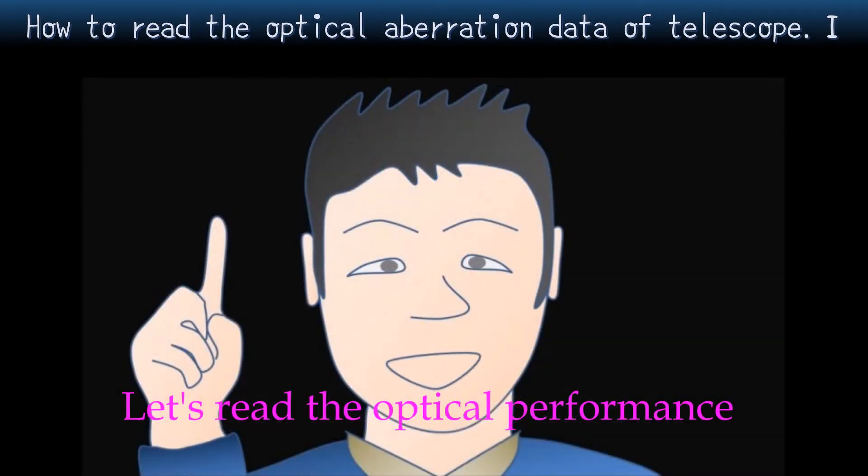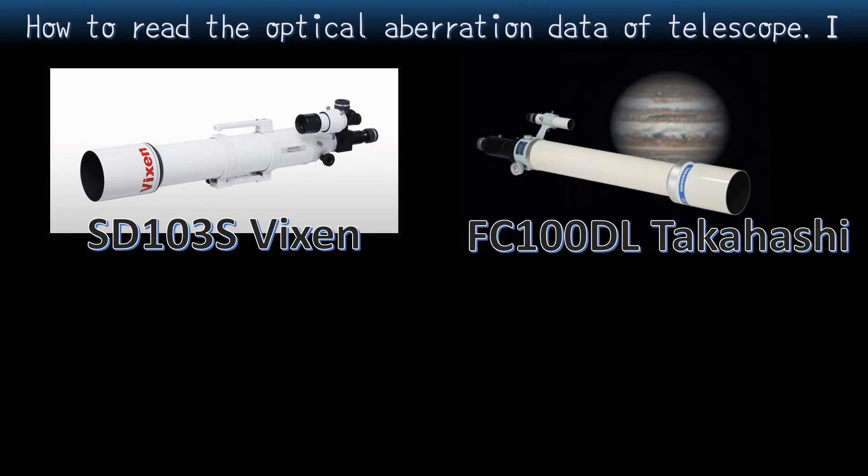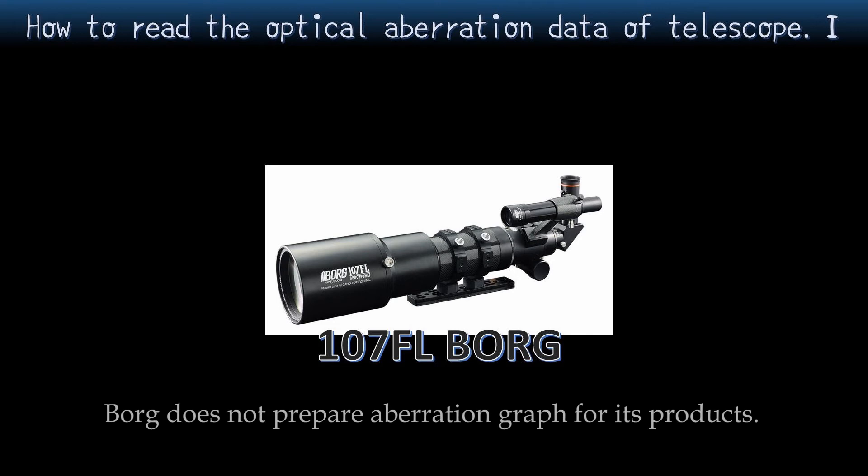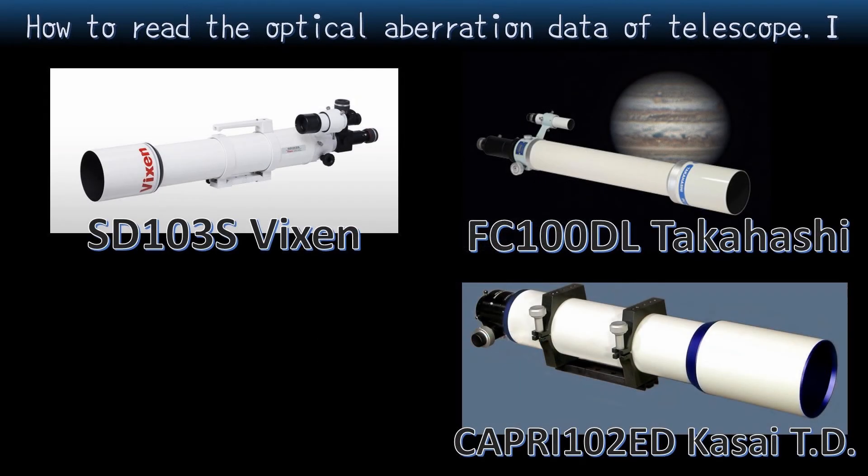Well, let's read optical performance of the telescope using this graph. This time I would like to compare SD-103S with other telescopes selling in Japan. Telescopes that I want to compare are apochromat-type telescopes using two objective lenses as SD-103S. Specifically, FC-100D Takahashi, 107FL Borg, and Capri-102ED Kasai Trading are on sale now. However, Borg does not prepare aberration graphs for its products. Those products are very popular because they can be customized, but I cannot compare with others, so I have never considered purchasing. For this reason, I'll compare them except Borg.